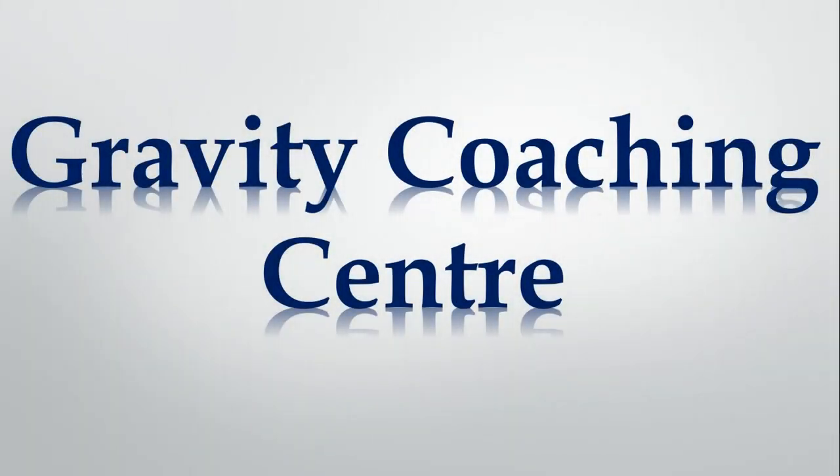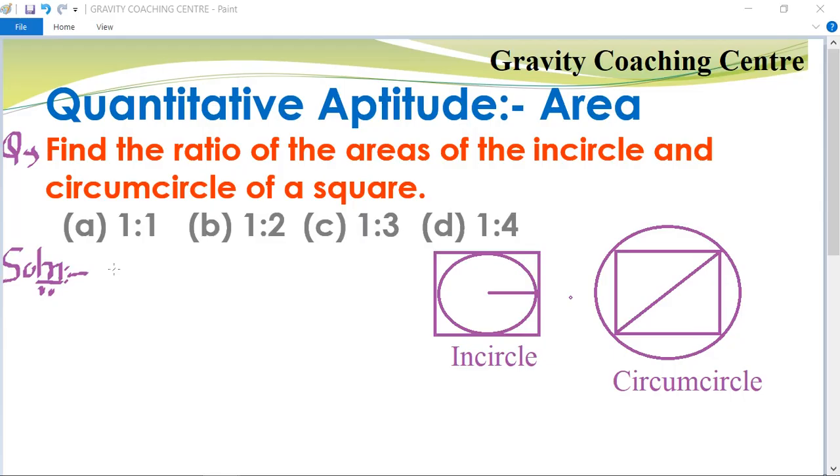Welcome to our channel Gravity Coaching Center. Quantitative Aptitude, chapter Area Questions. Find the ratio of the areas of the incircle and circumcircle of a square. In this question, there are two diagrams: one is the incircle, another is the circumcircle.